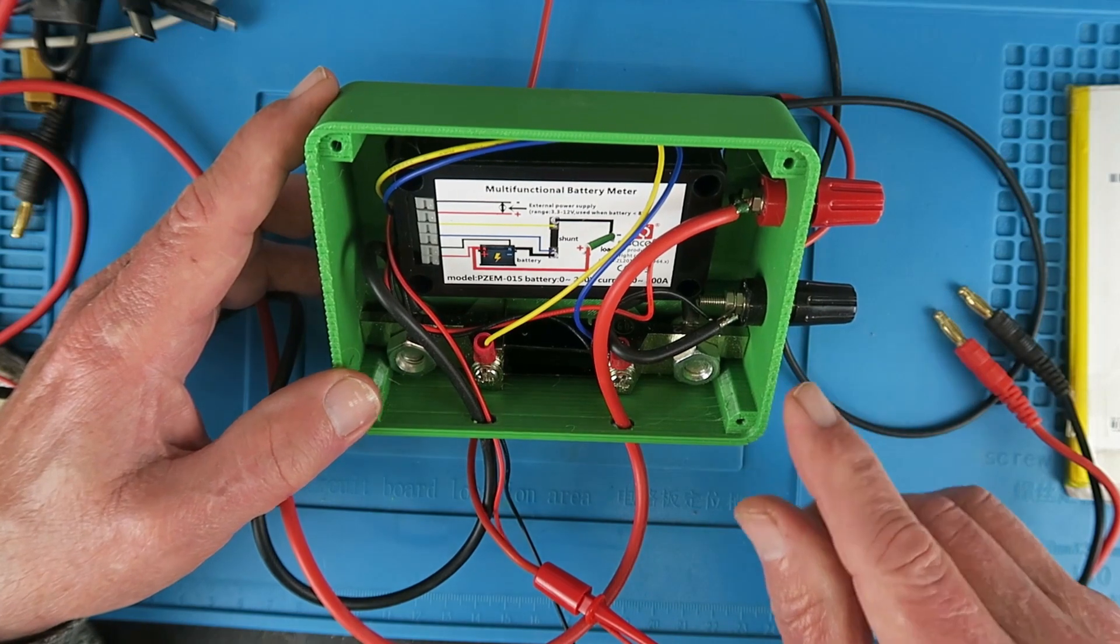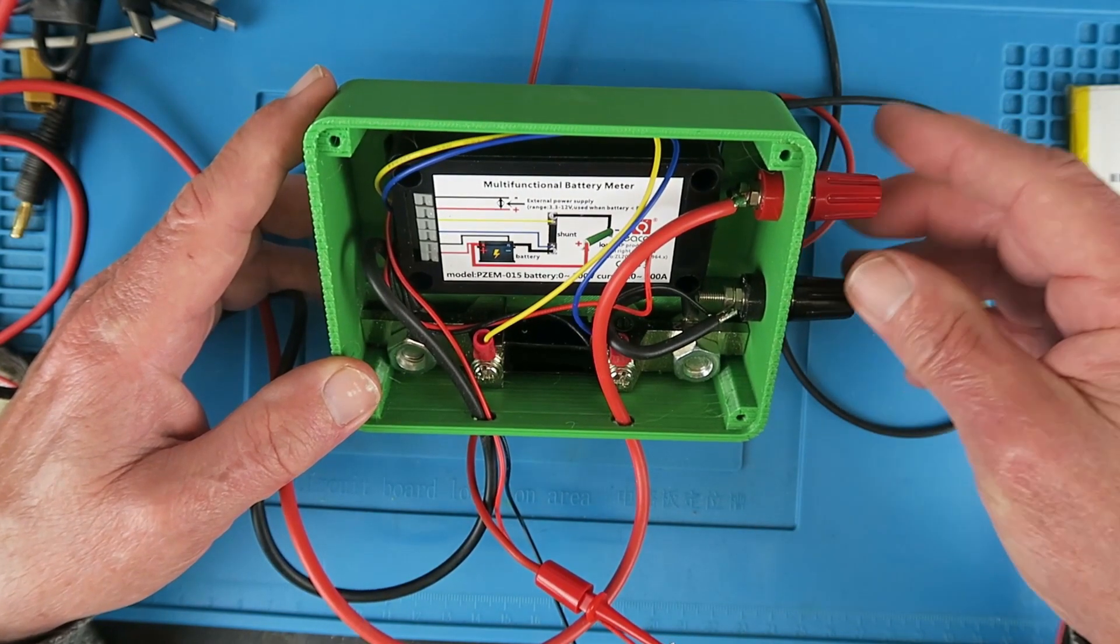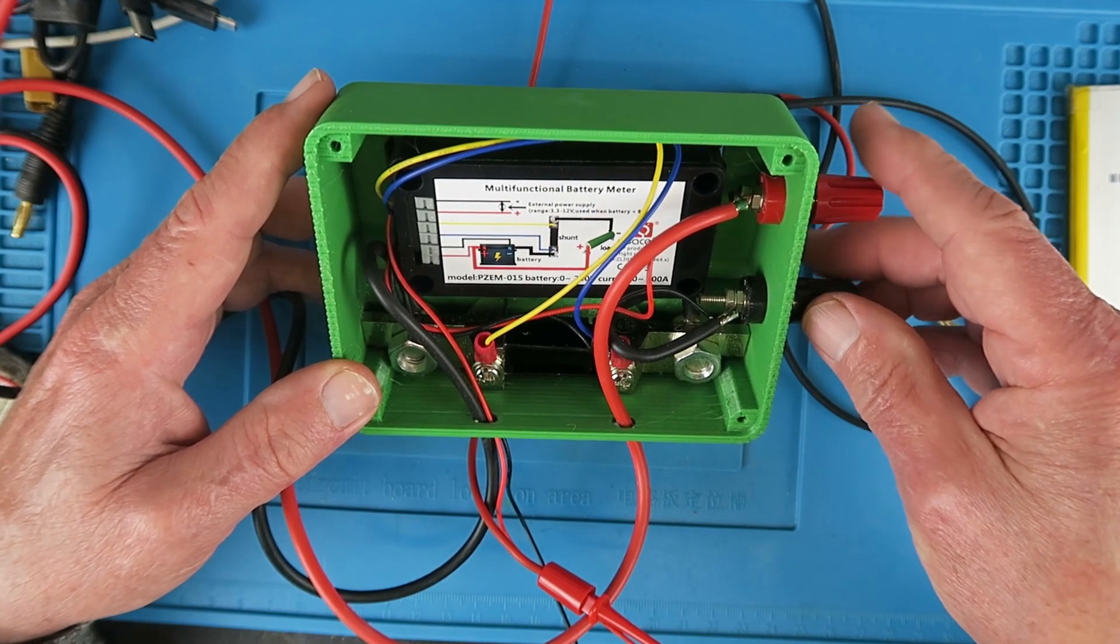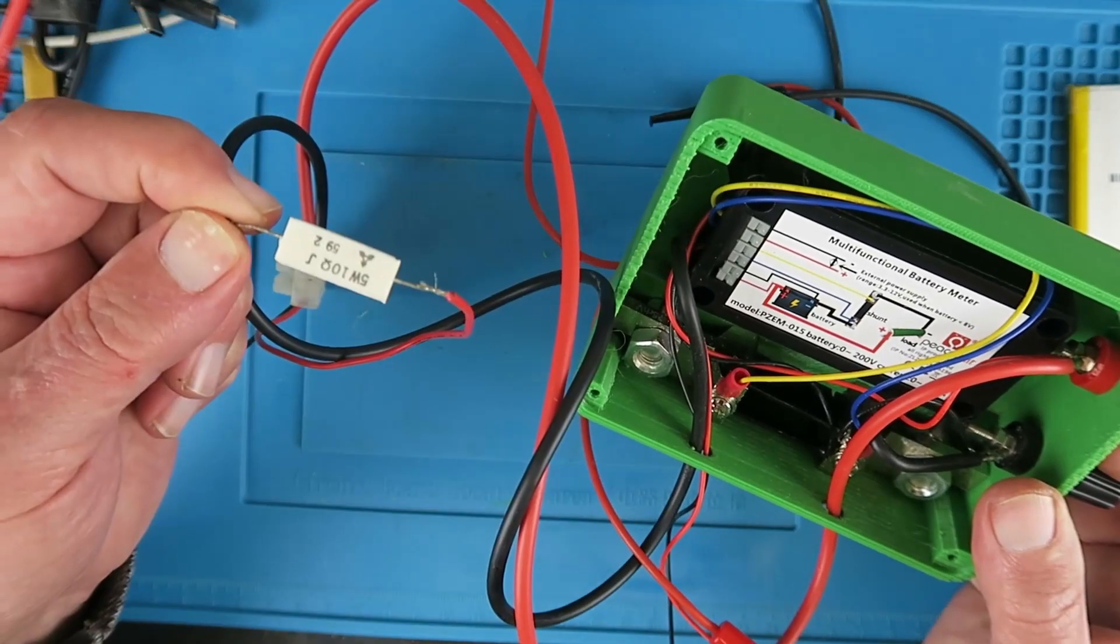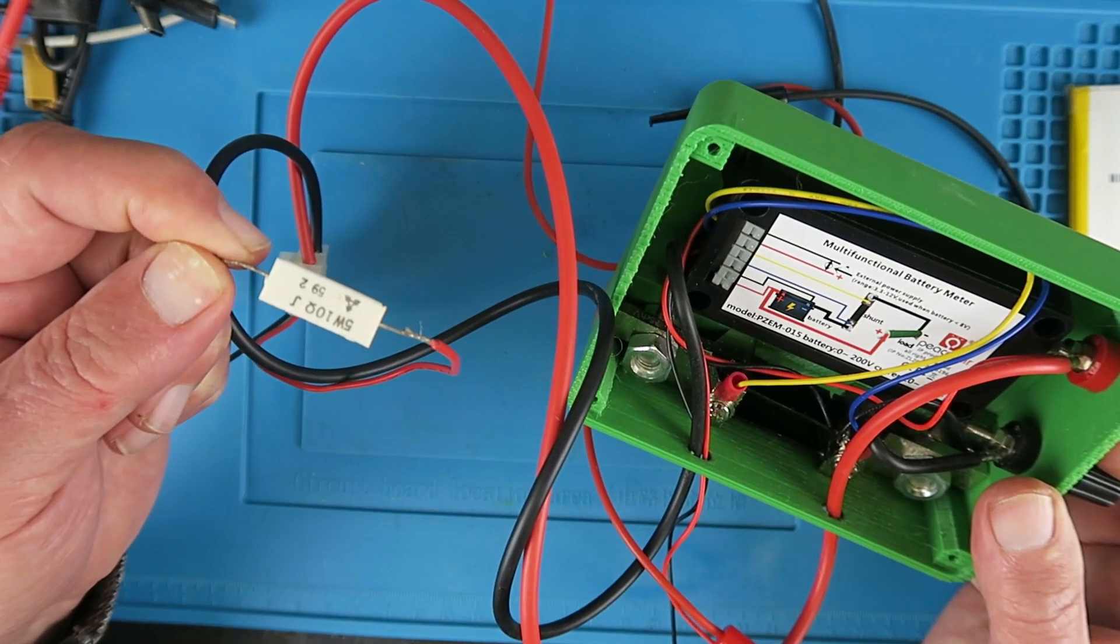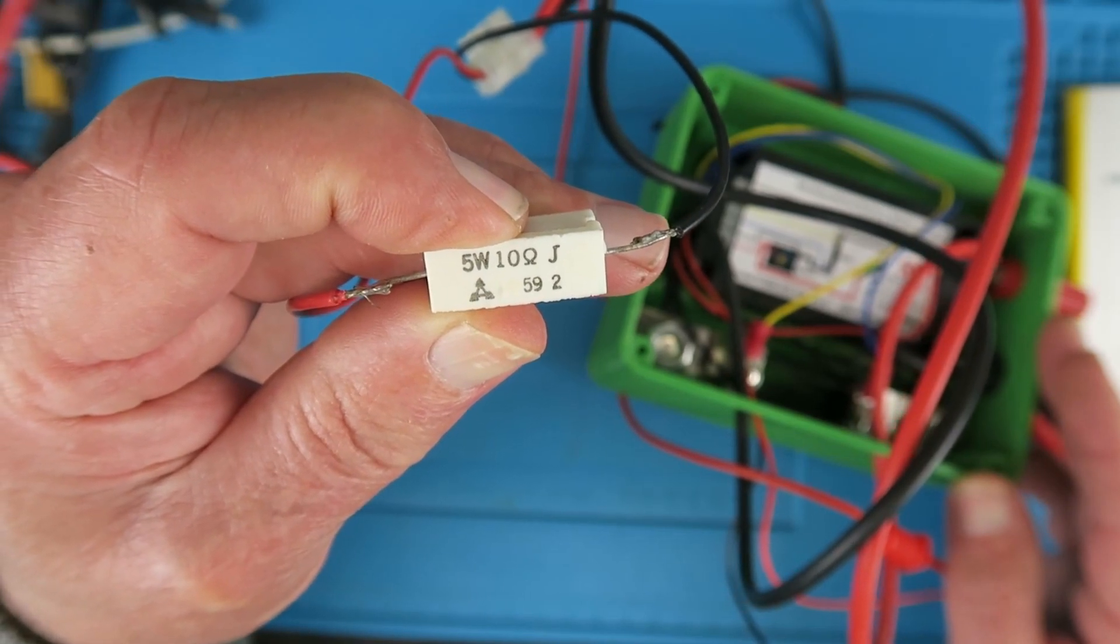For my purposes rather than hard wiring everything I've put some terminals on to connect whatever type of battery I feel like testing at the time and then just these two cables to connect to a load of some description. At the moment I'm just using this 10 ohm resistor as a load.